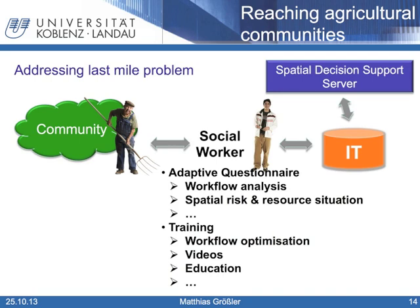Additionally, a social worker can also address the last mile problem. The social worker could either work with an adaptive questionnaire, as Melanie Platz explains in her presentation, or provide training to the agricultural community. With a questionnaire, analysis of the actual pesticide application workflow could be performed. Furthermore, the actual risk and resource situation at the agricultural community could be verified. The provided training can include workflow optimization of the pesticide application process, or videos and education about precision farming.